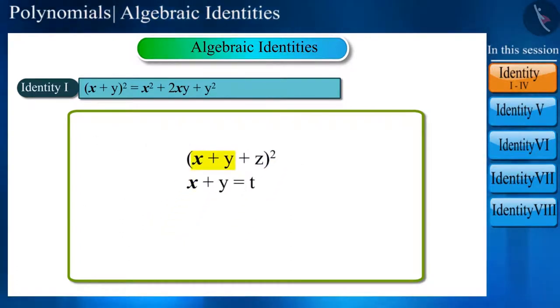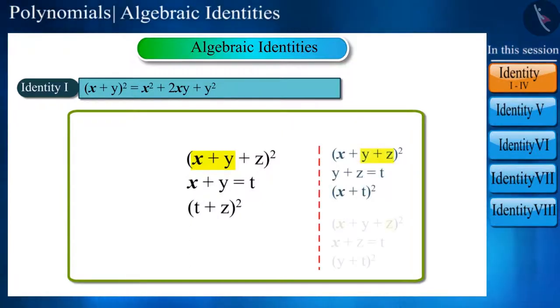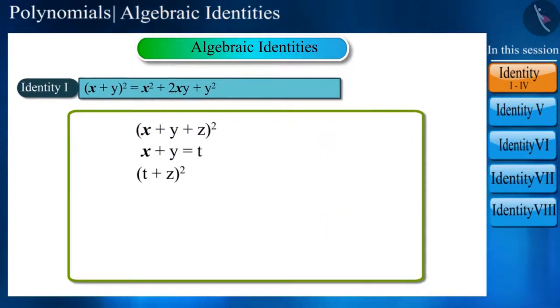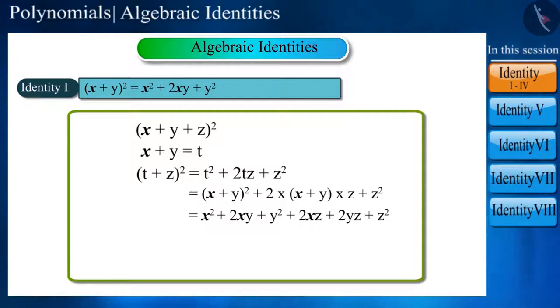Here, if we assume x + y as t, then this trinomial identity can once again be seen as a binomial identity. You can also assume y + z or x + z as t. Our goal is to convert it from a trinomial to a binomial. Now we can use Identity 1 and then keep the value of t.